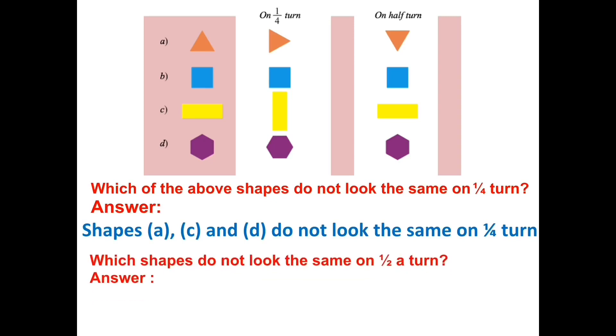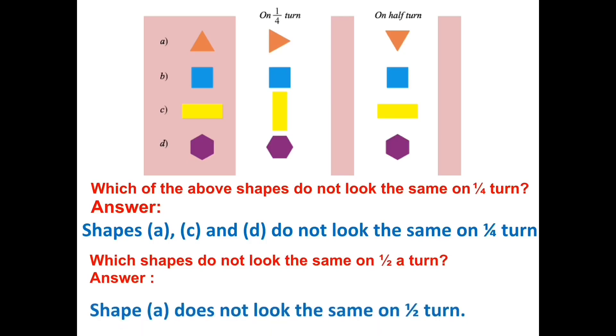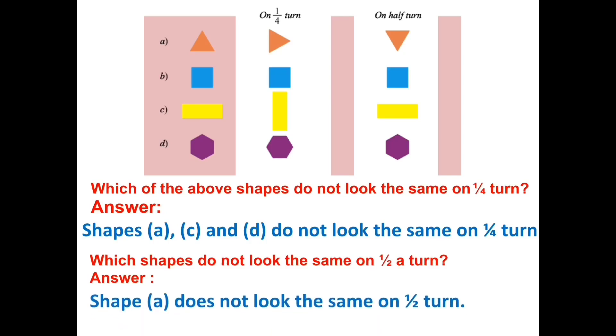Which shapes do not look the same on half a turn? Shape A does not look the same on half a turn.